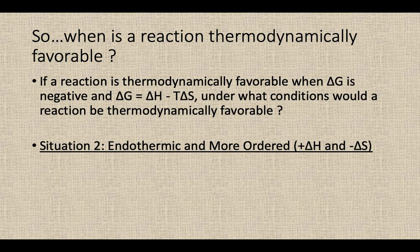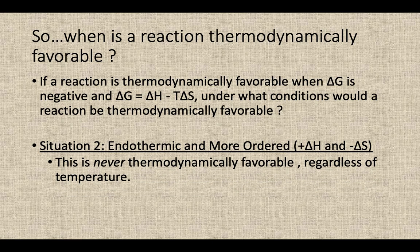What if we have situation number two, where the reaction is endothermic — absorbing heat energy from the surroundings, so a positive delta H — and it's becoming more ordered? Maybe it's going from three moles of reactants down to one mole of products, or from gas down to solid. If it's becoming more ordered, that's a negative delta S. If you have a positive delta H minus a negative delta S, no matter what, that delta G value is going to be positive. A positive delta G means it's thermodynamically favorable in the reactants direction — never favorable to the product side, regardless of temperature.